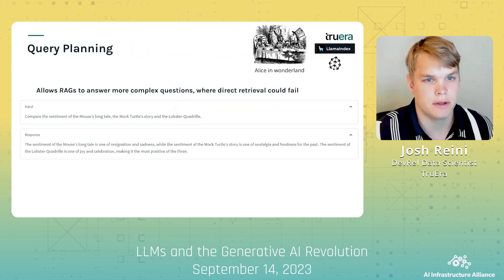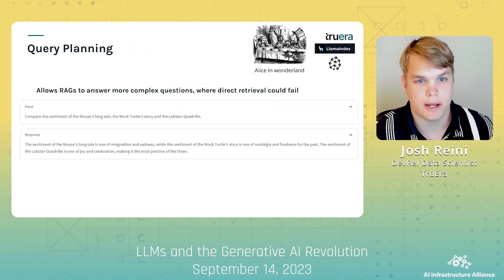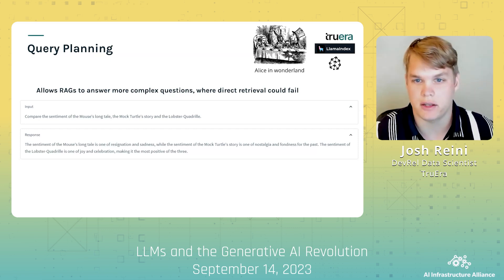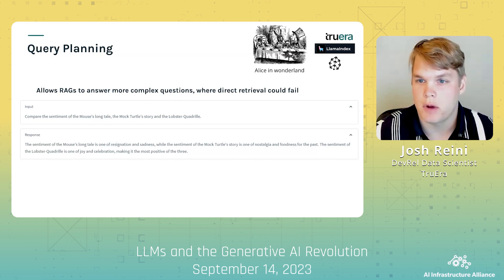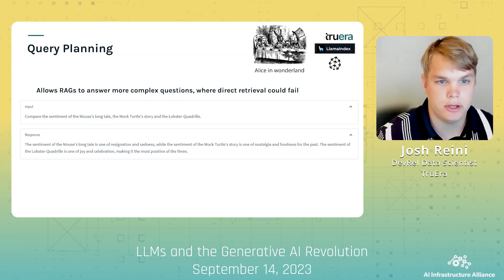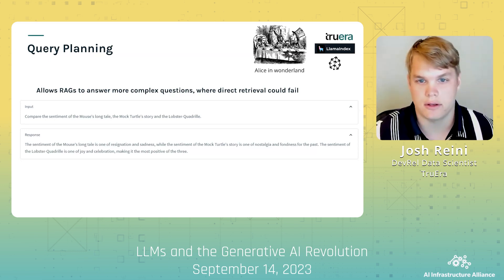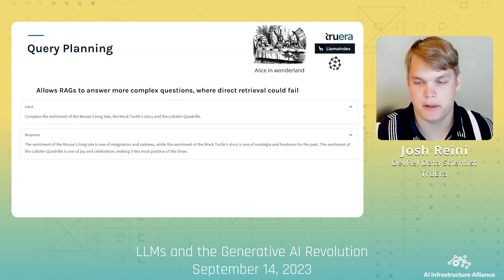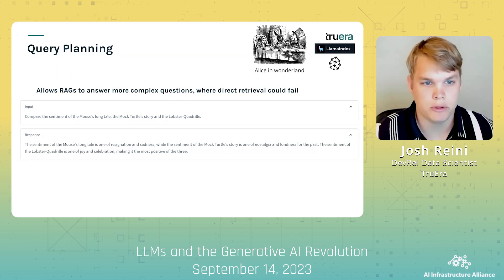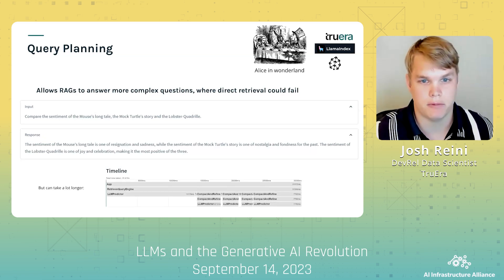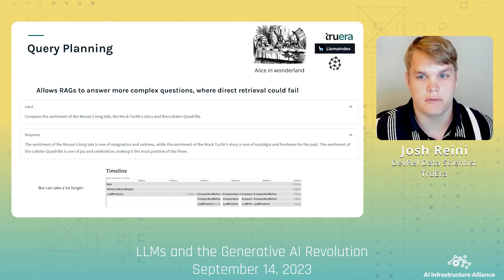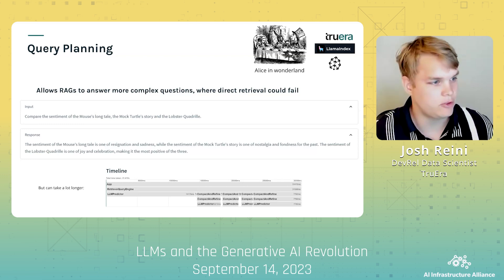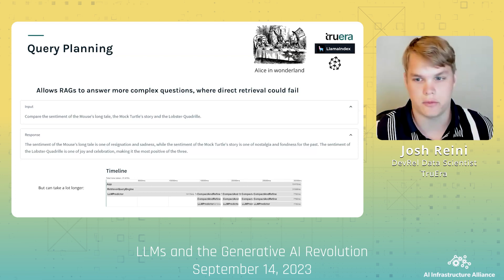Let's see this in action. In this example, I've created a RAG QA on the text of Alice in Wonderland. To test the application, I pulled in questions from a study guide and asked it to compare the sentiment of Mouse's long tail, the Mock Turtle story, and the Lobster Quadrille. By using query planning, our application was able to break down the question into separate parts to retrieve the text around each of the three stories, and then bring them into the LLM for inference. It's important to note that while there's a tremendous benefit in terms of response quality, it comes at the cost of higher latency and token usage. You can see this in the timeline displayed by TrueLens, where just one query using this method took around 30 seconds.